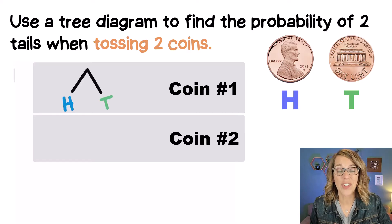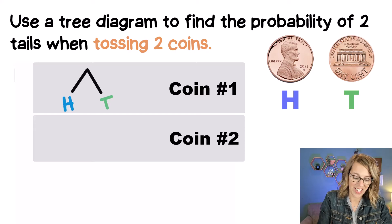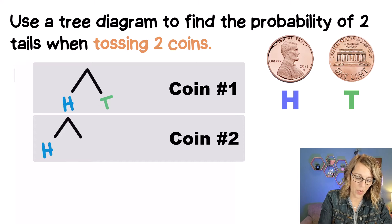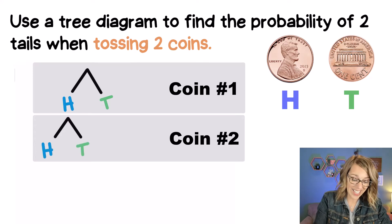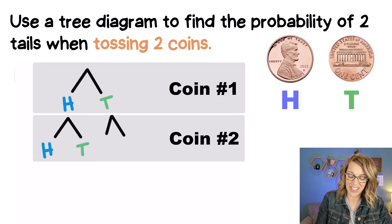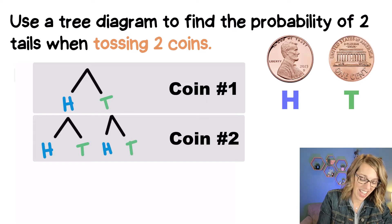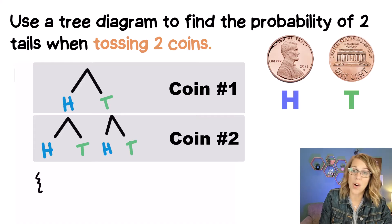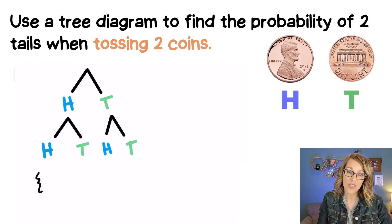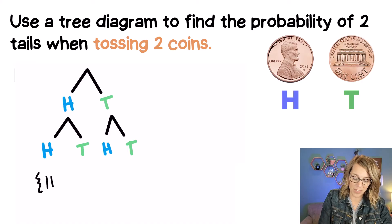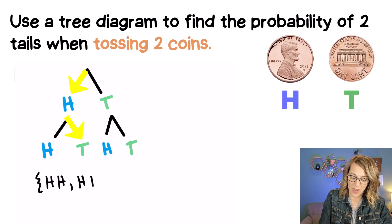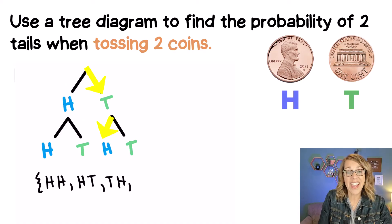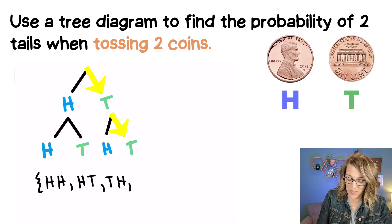For our second branching, which represents the second coin, I could follow heads with either another heads or a tails. And I could follow that tails similarly with either a heads or a tails. This gives me our sample space, which is equal to the set of all possible outcomes. I can trace down each outcome: heads followed by heads, heads followed by tails, tails followed by heads, and finally tails followed by tails.